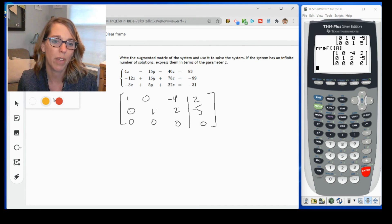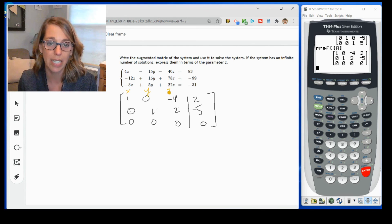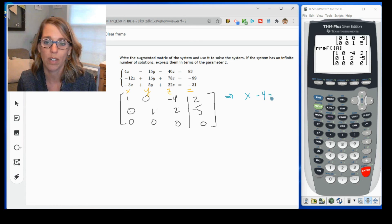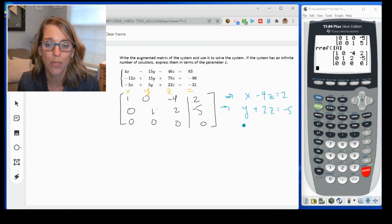If I read this, let me go ahead and put my variables up here. These still represent the same variables, X, Y, Z. And then that last row is separated by the equal sign. So as I'm reading these, this says that one X minus four Z is equal to two. The next row says that one Y plus two Z is equal to negative five. And this last one says that I don't have a unique value for Z. So we're just going to let Z be our free variable.